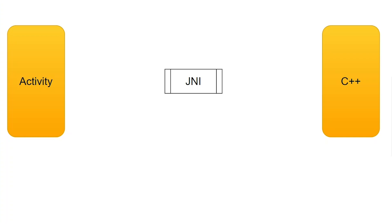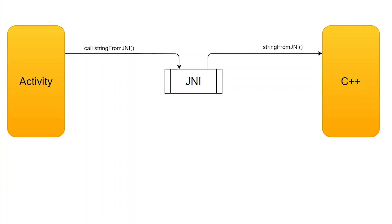In our example application, the first thing we will do is call the C++ function from the Activity. The Activity will call the `stringFromJni` function to the JNI bridge, and then JNI will call `stringFromJni` in the C++ class. After processing, the response will be returned to the JNI bridge, and then the JNI bridge will return the response to the Activity to be shown to the user.